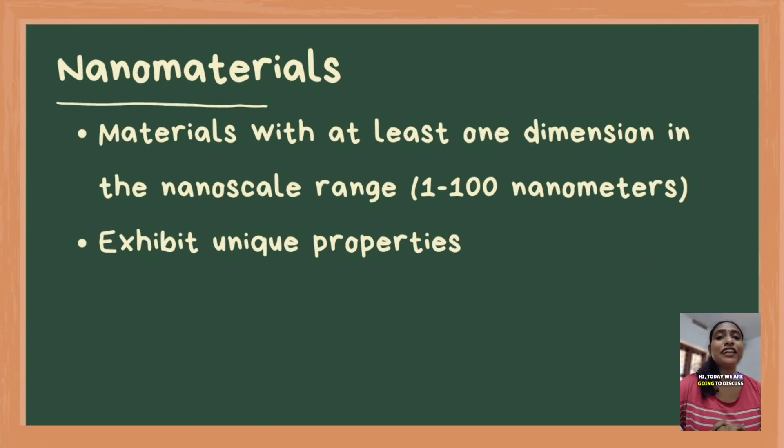Hi, today we are going to discuss nanomaterials and its classifications. First, let us see what is meant by nanomaterials. The materials with at least one dimension within the nanoscale range, which is 1 to 100 nanometers, exhibiting unique properties due to their small size and high surface area to volume ratio, is called nanomaterials.